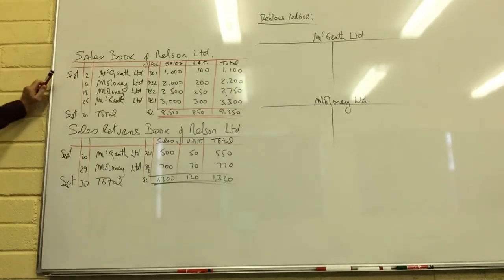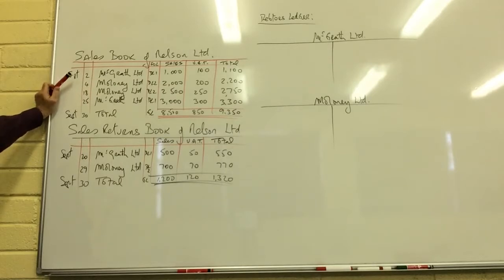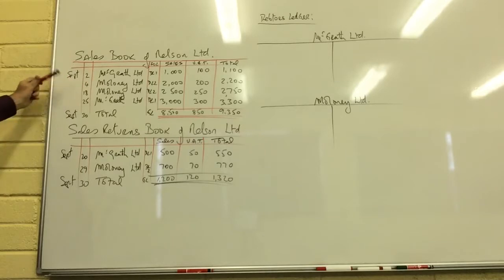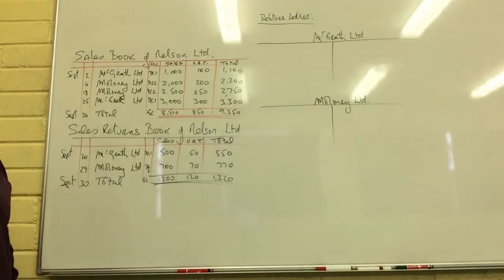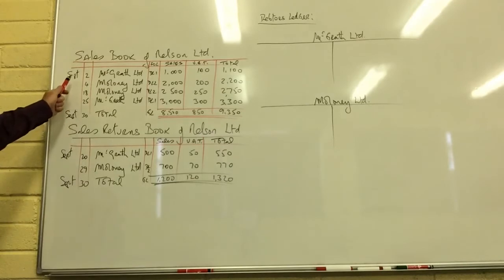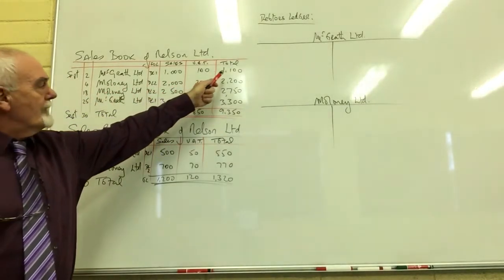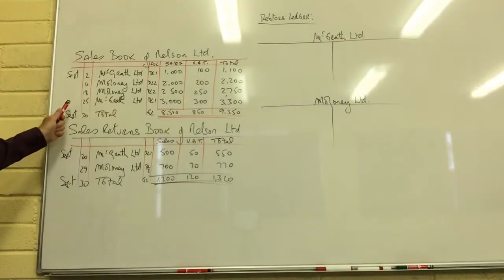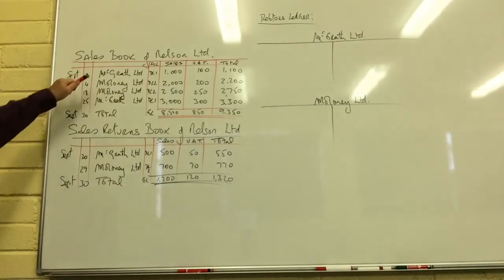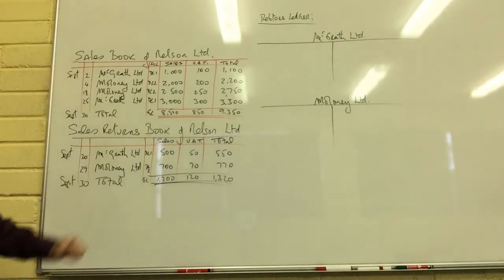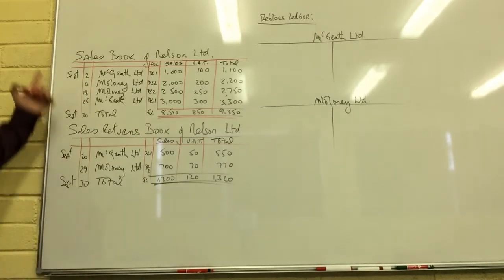Four times during September, Nelson Limited sold goods on credit to their customers. On the 2nd and the 25th they sold goods on credit to McGrath for £1,000 and £3,000 with £100 and £300 worth of VAT respectively, so they invoiced McGrath on the 2nd for £1,100 and on the 25th for £3,300. We'd send an invoice to them, keep the copy, and use the copy of the invoice to write up our sales day book.